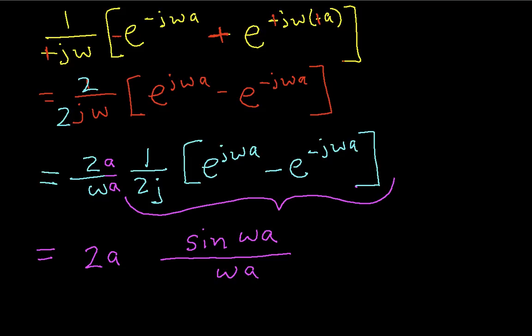Now, this function occurs often enough that it's got its own name. And that name turns out to be, for reasons that I don't know, sinc of omega a. Okay, so in general, sinc of x is the sin of x over x. Okay, So, we can write this whole thing as 2a times the sinc of omega a.